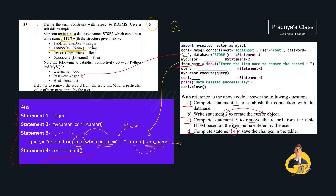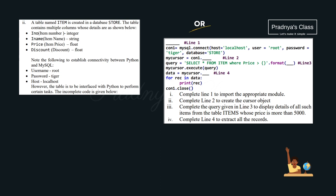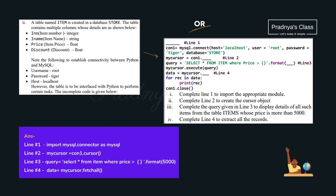Here are the answers for all 4 statements. Now let's look at the OR part of the same question. Before I show the answers, solve it yourself. You can cross-check with these answers — I think no further explanation is needed. The first line imports the appropriate module. The second line creates the cursor object. The third line displays details of items from the item table where price is greater than 5000. The fourth line extracts all records using fetchall.